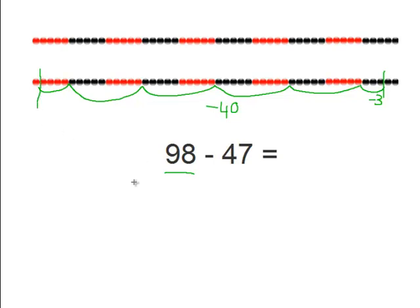So that is forty-seven. So now we know that one string of beads is fifty and plus one. So the answer must be fifty-one. Now let's try another way of solving this problem.